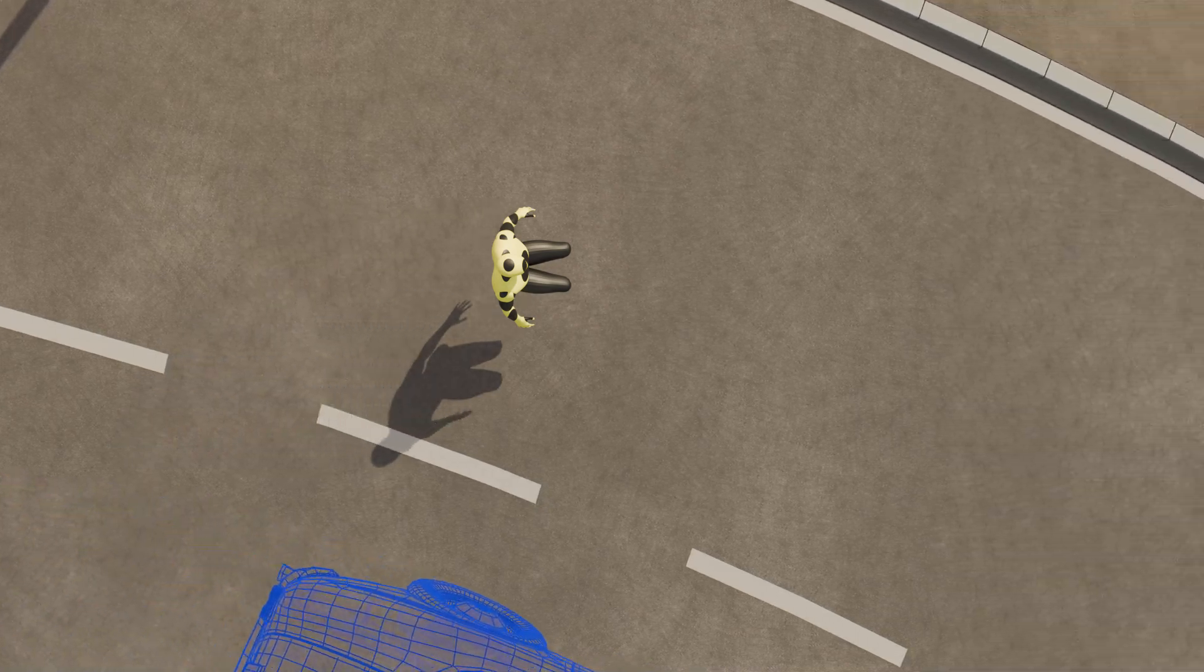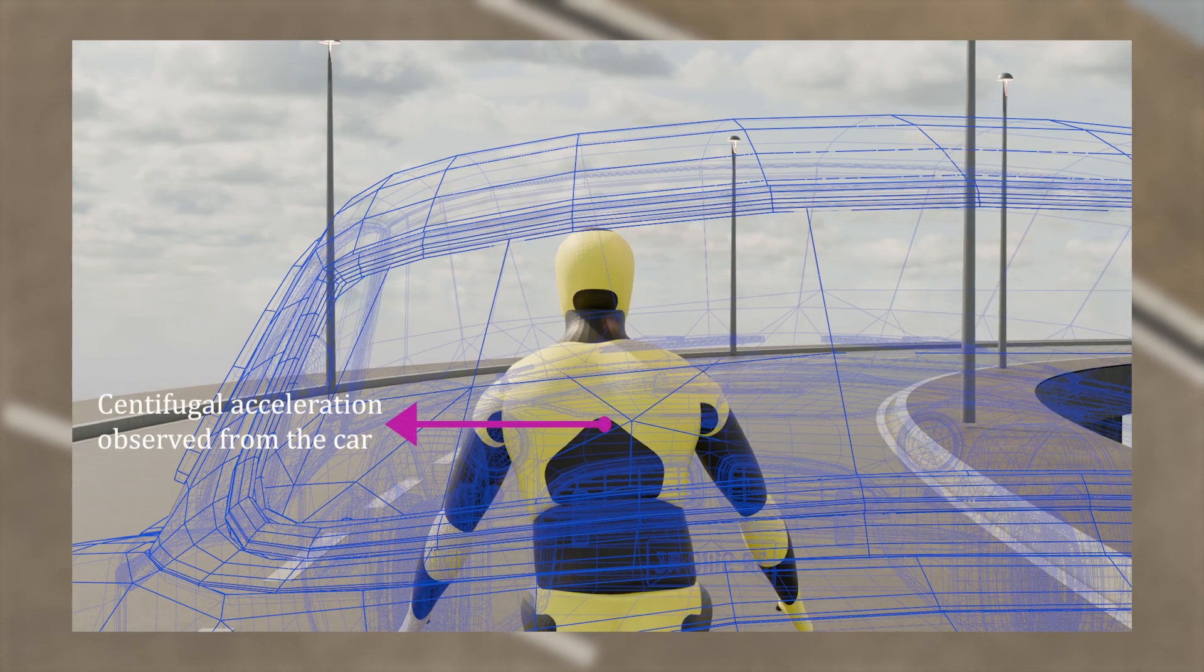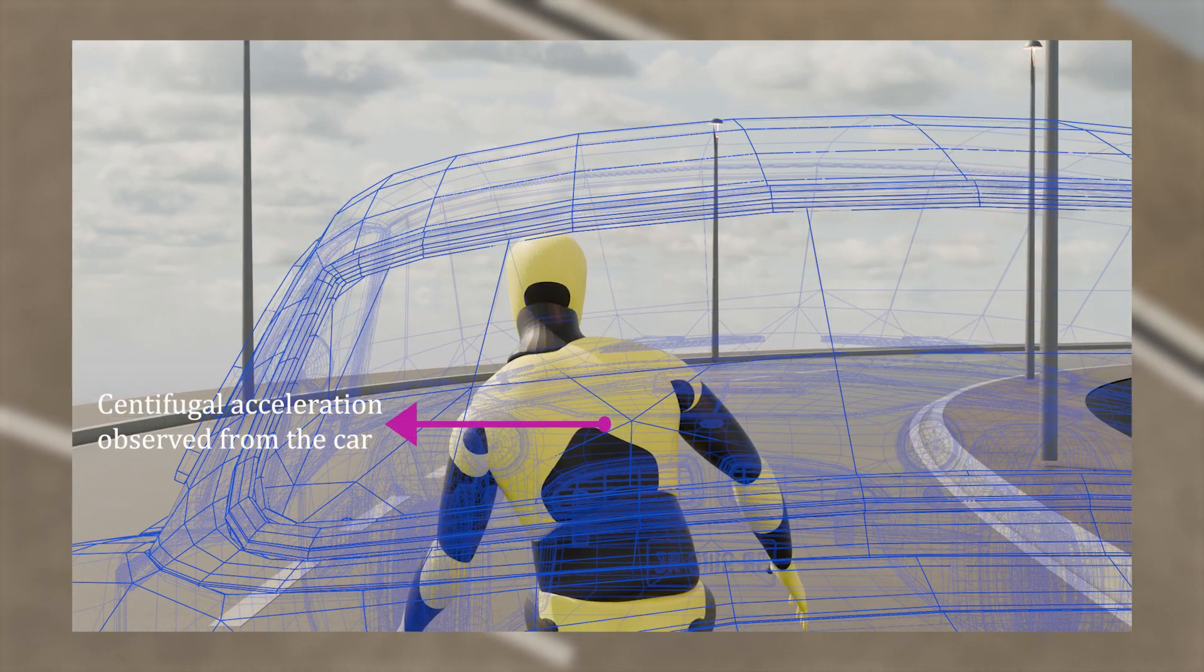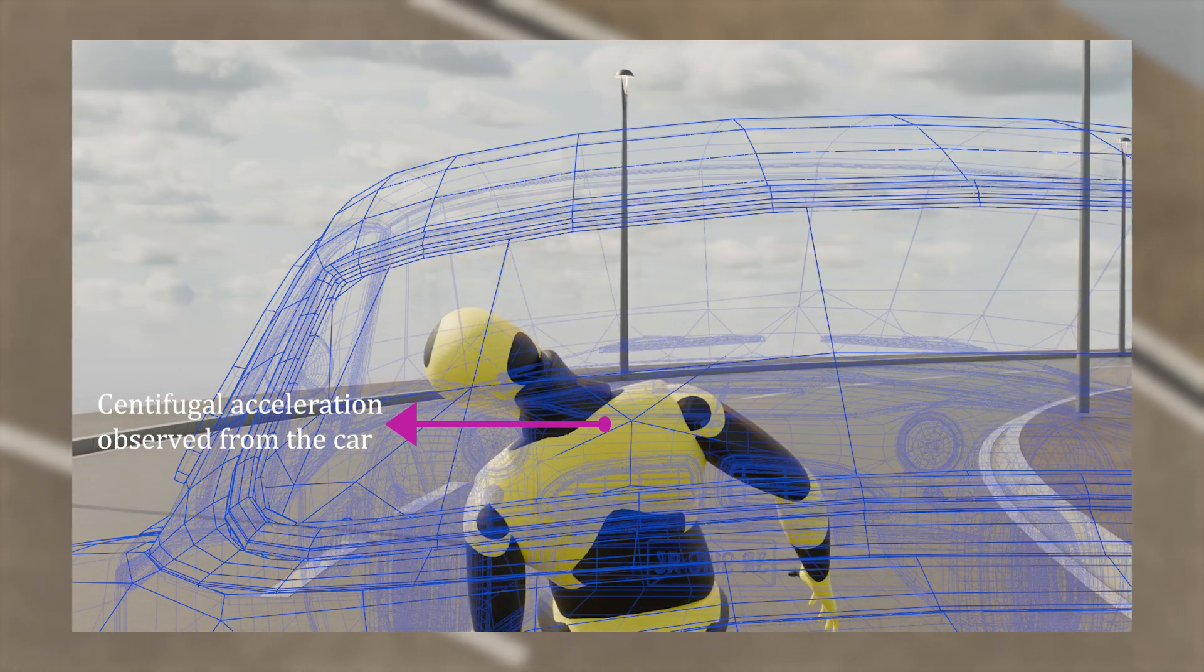Though in real life, we are attached to the car through the seat and the seat belt. Here, the dummy's hips are attached to the car. It turns with the car while the upper body tries to continue that straight line path.